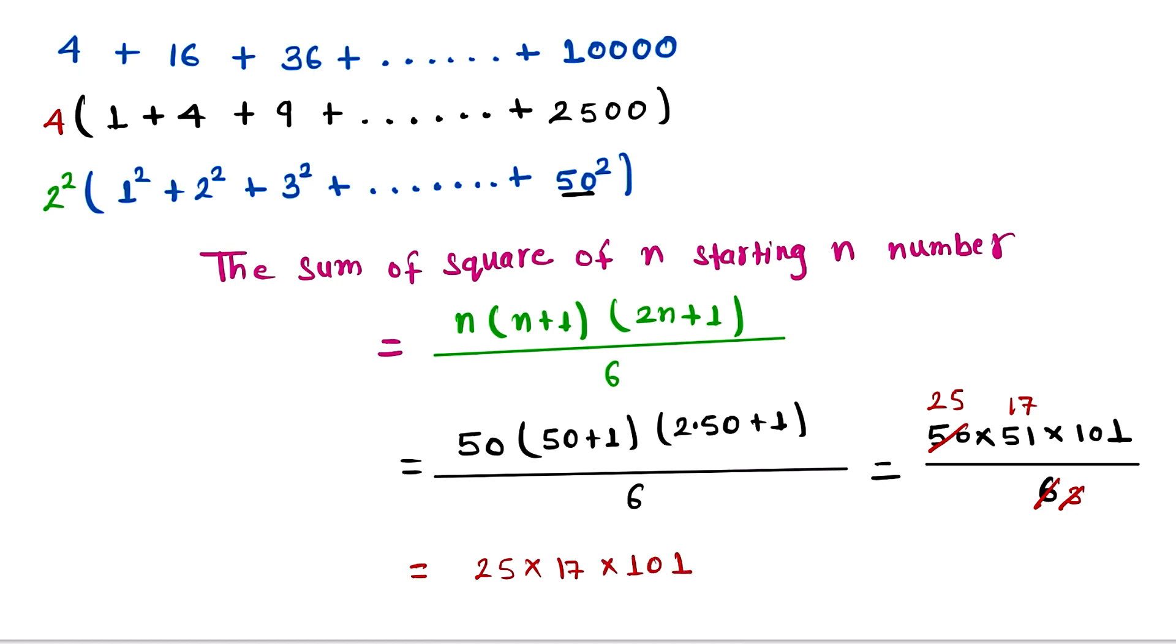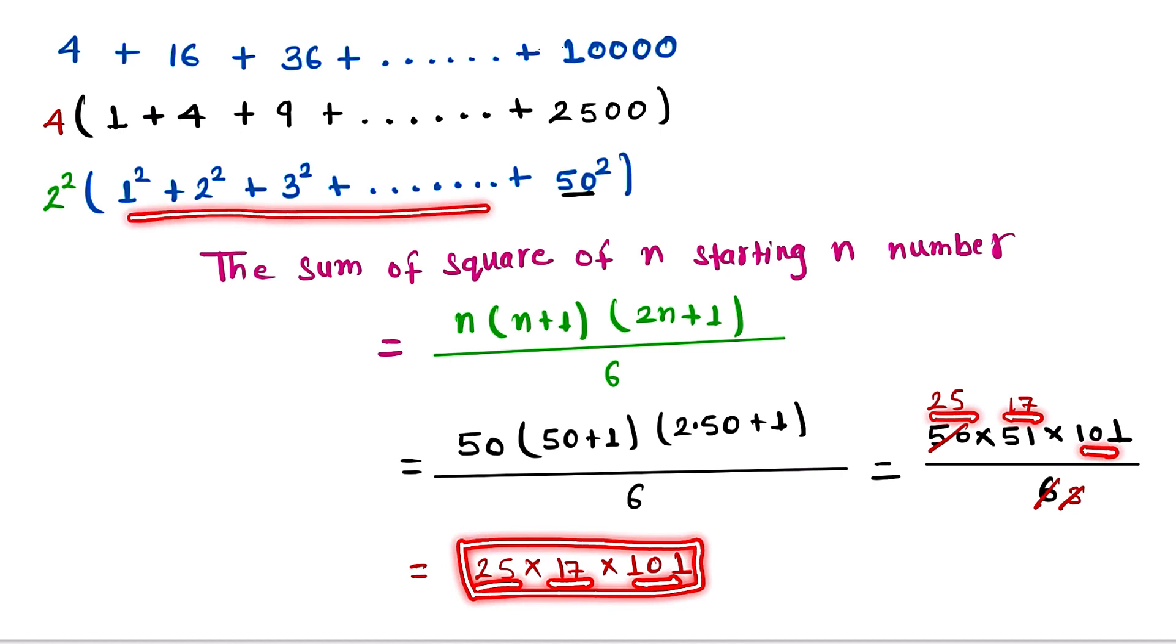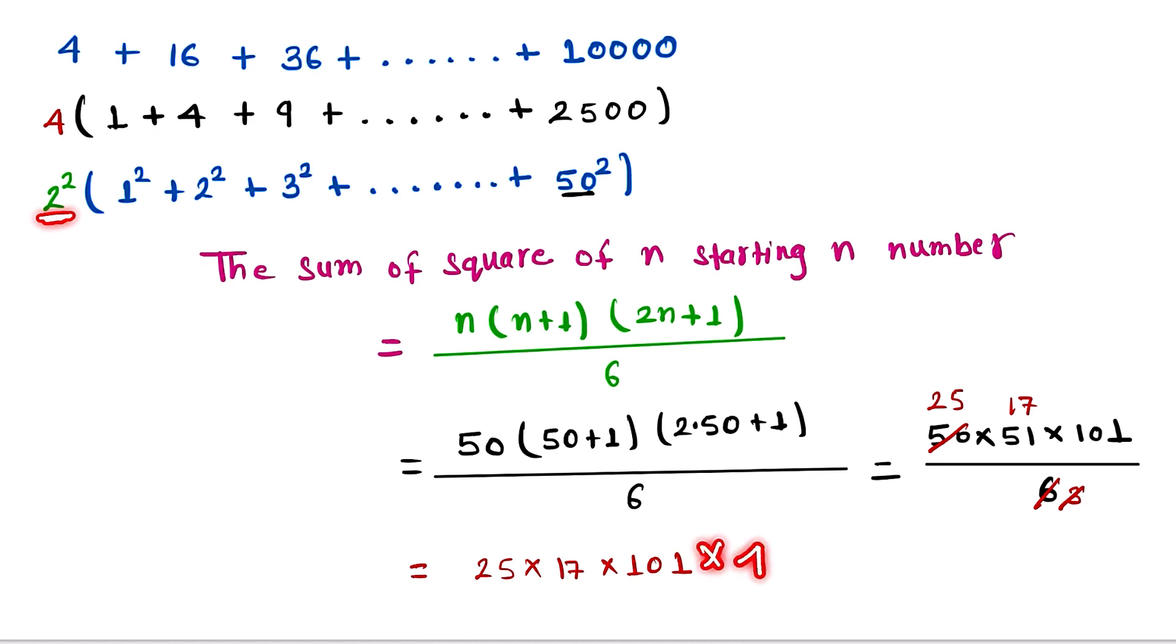Since we have 2² in front, this is multiplied by 4. So the value of this is equal to 171,700. This is our final answer: 171,700.